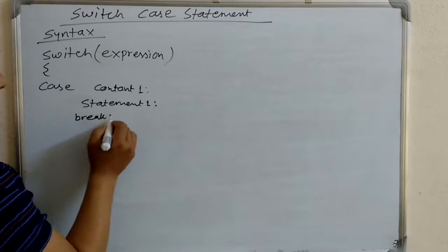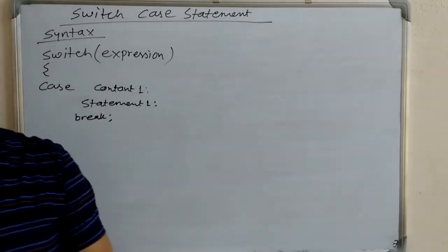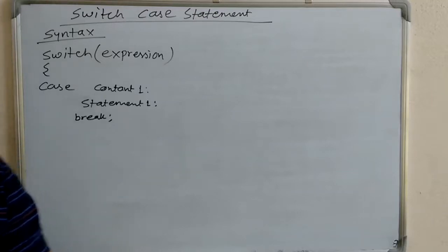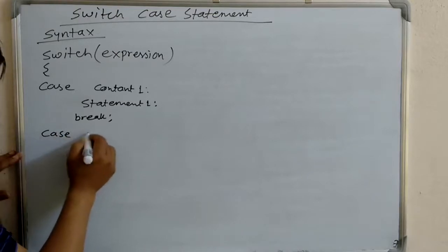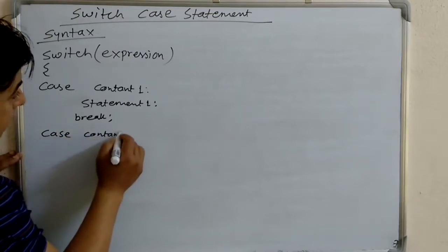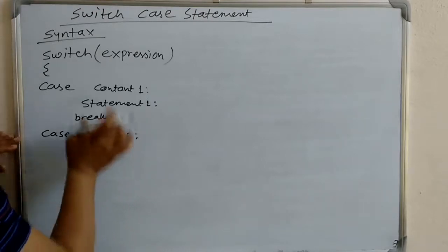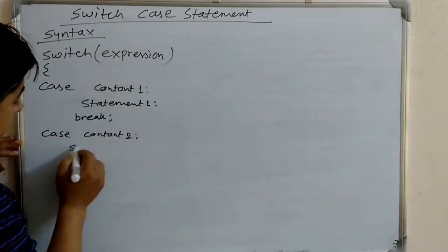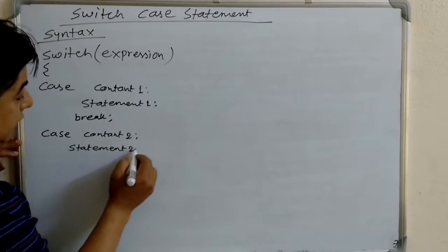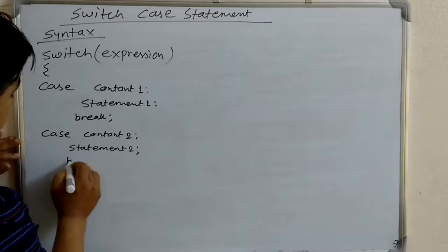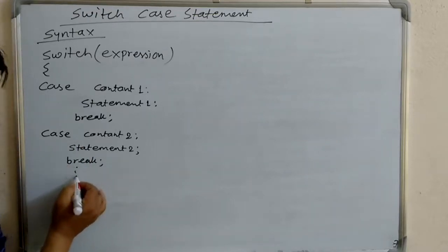After the statement, we write 'break'. Break is used to exit from the switch statement and go to the next level. Then for constant two, if this constant two is matched, then it executes statement two, and then we write break again.